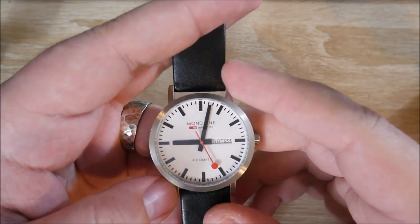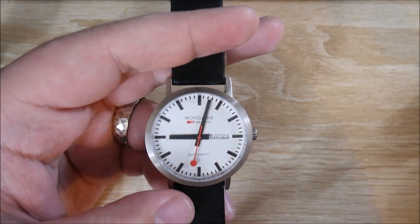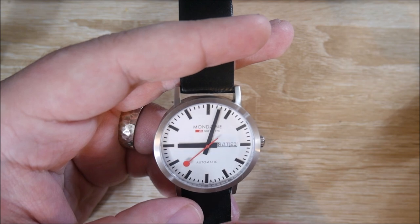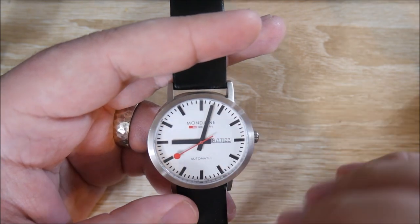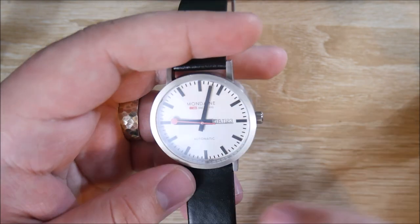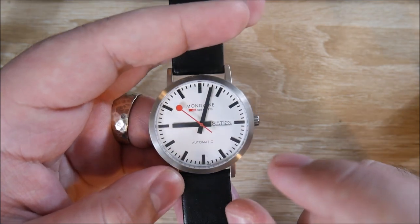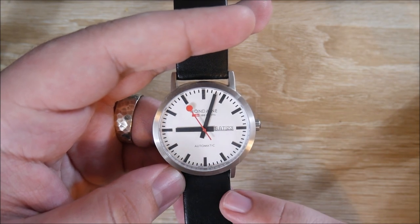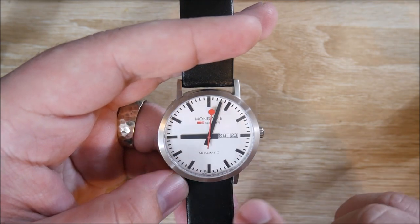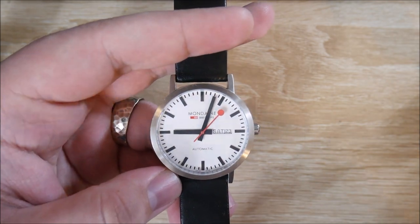Despite there not being any lume, I really haven't had too much of an issue reading this at night. The bright white dial and stark contrast with the black indices and hands make this very readable, even in darker situations. The dial is very nice. Painted hands - short hour hand, long minute hand, bright red second hand in a lollipop style. Applied hour indices and printed minute track. And this one has the day-date complication.